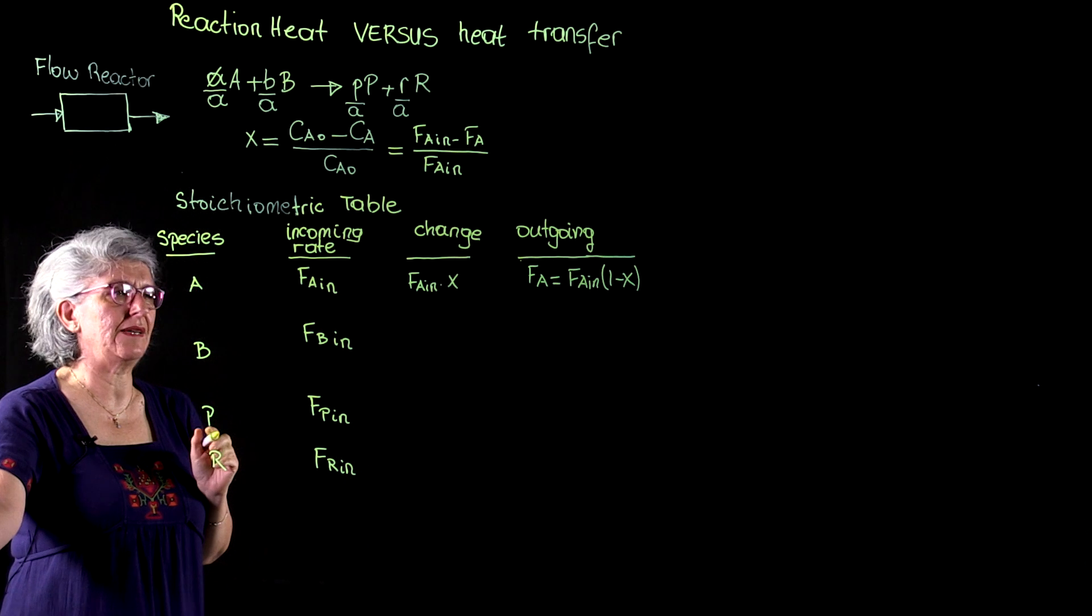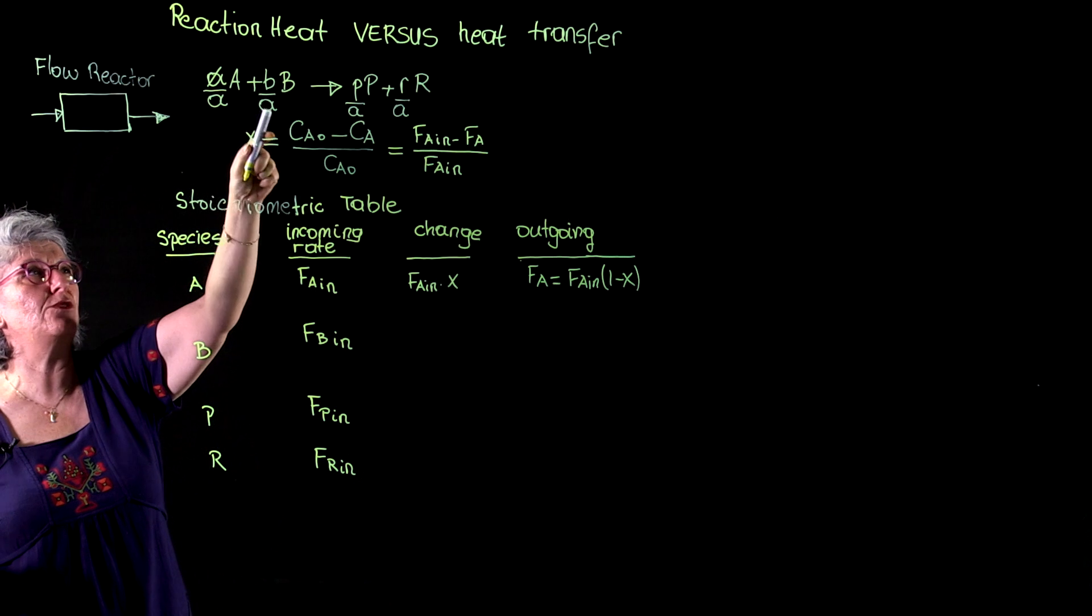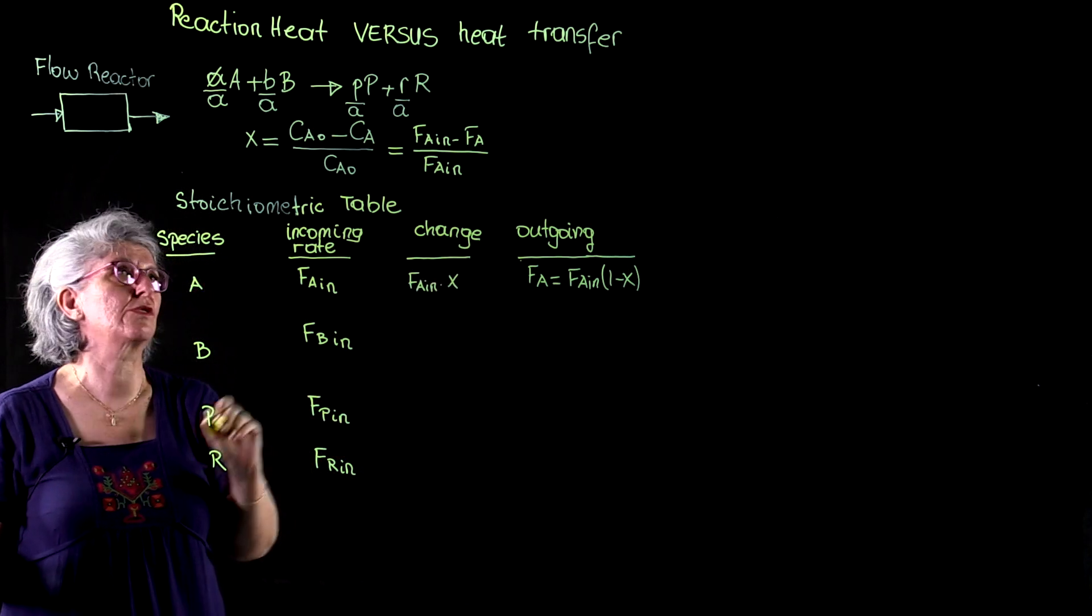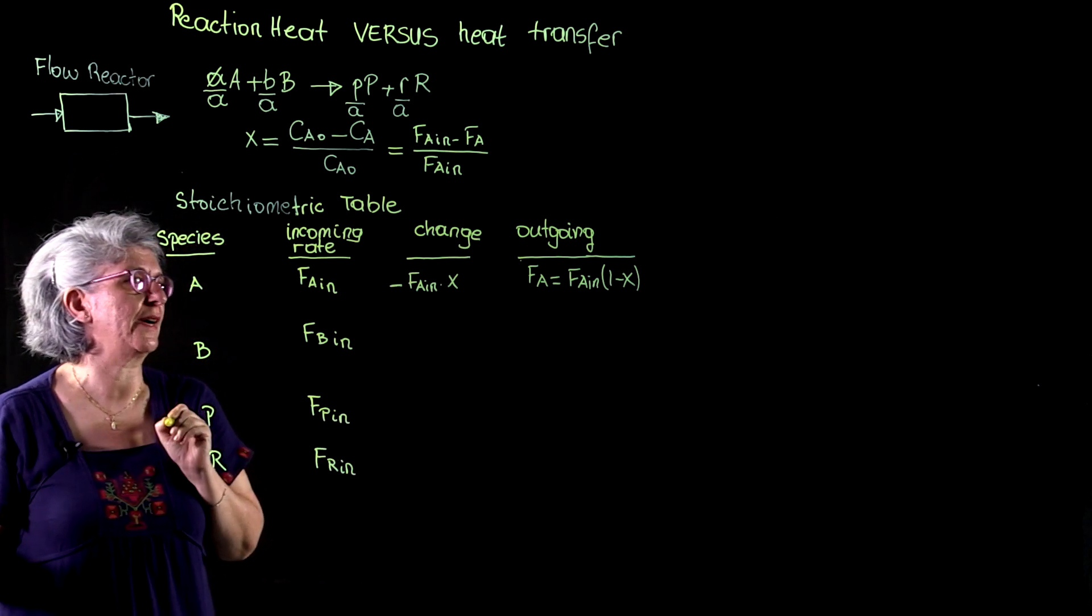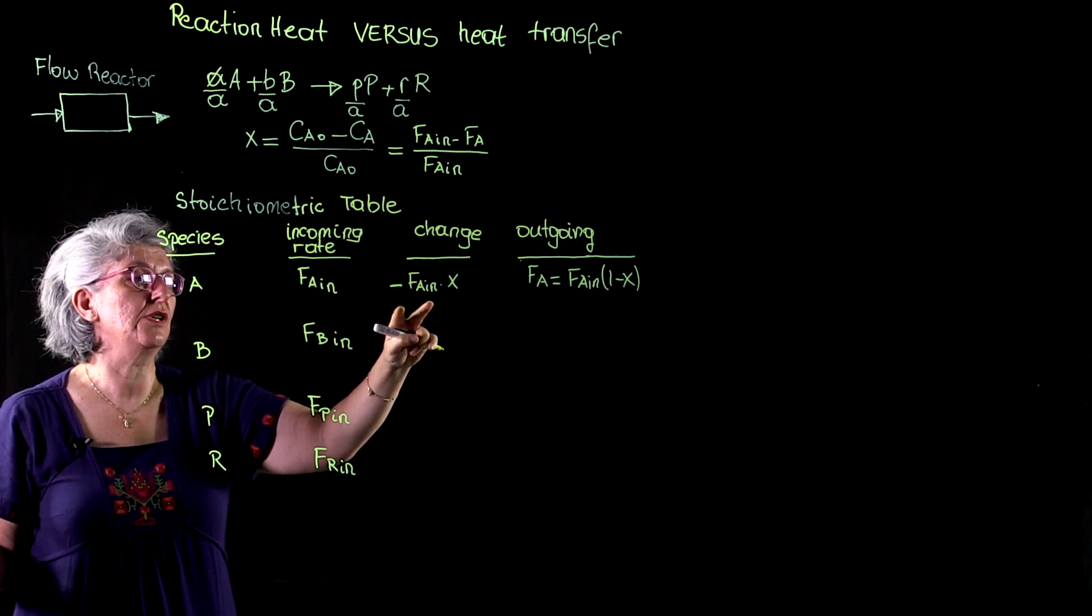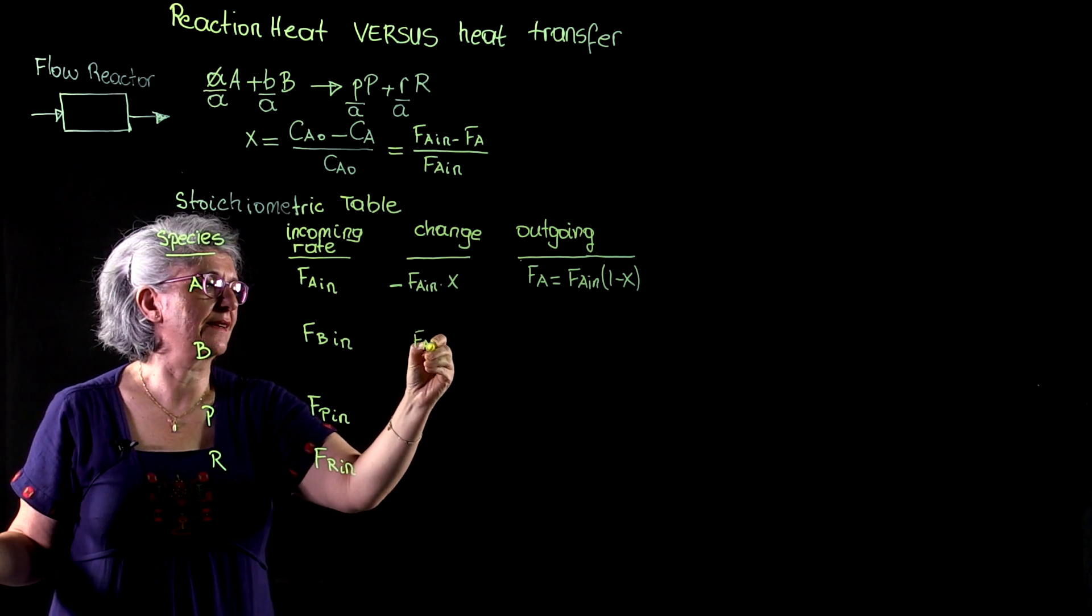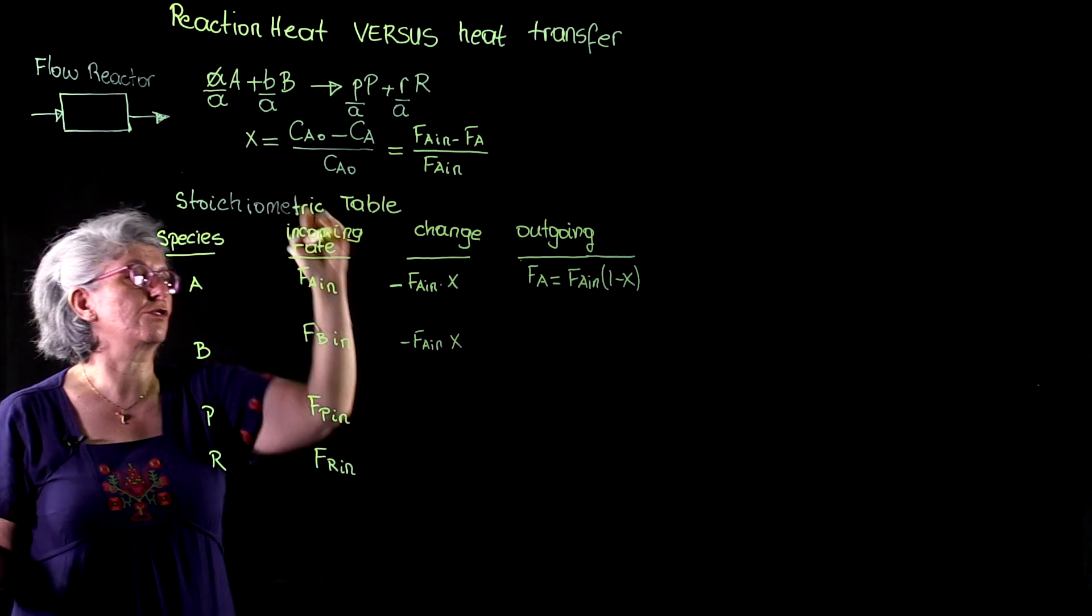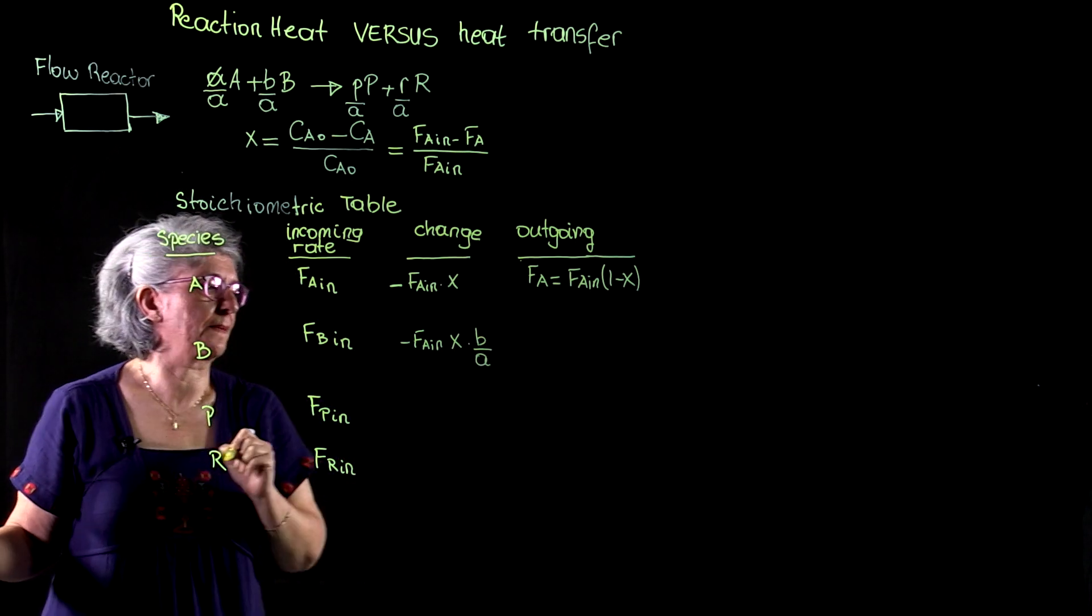Now, the change in B is going to be proportional to the stoichiometry of B to A. If A has FA in times X moles converted, then B should have, of course this is consumed so I have to put the minus sign, FA in times X with the minus in front times the stoichiometry B over A.